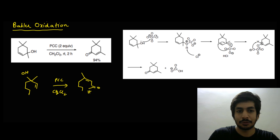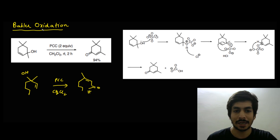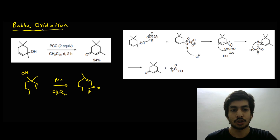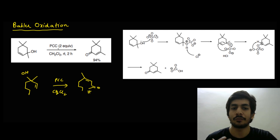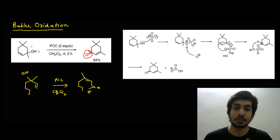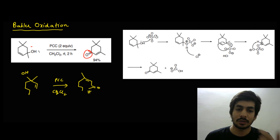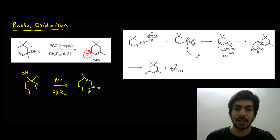This important transformation is called Babler oxidation. For secondary alcohols, PCC converts them to ketones, and for primary alcohols to aldehydes. But for tertiary allylic alcohols in particular, there is a very important transformation — the Babler oxidation. In the example shown, a tertiary allylic alcohol is treated with PCC (often two or more equivalents). A ketone is formed, but the oxidation occurs at a different carbon — the double bond has shifted. This double bond migration and oxidation is the hallmark of Babler oxidation.